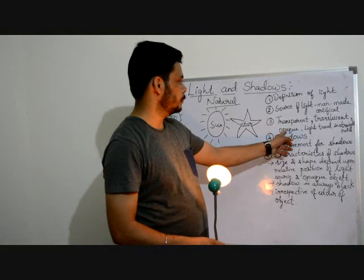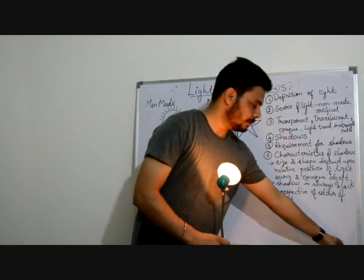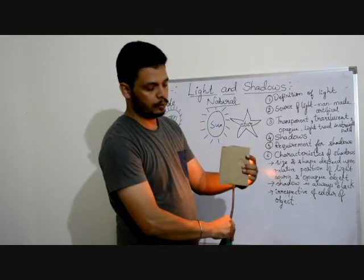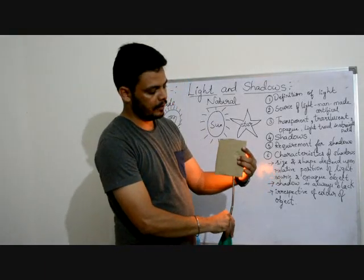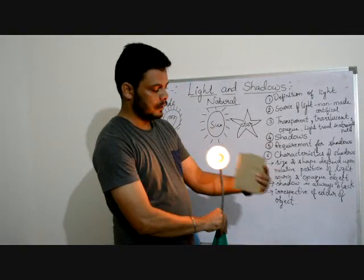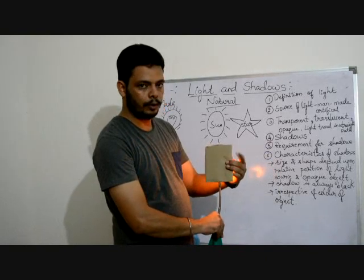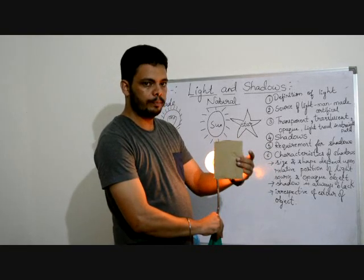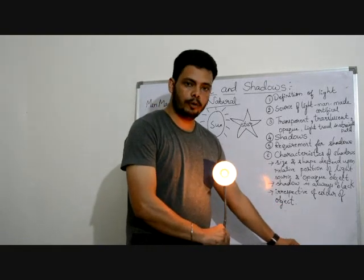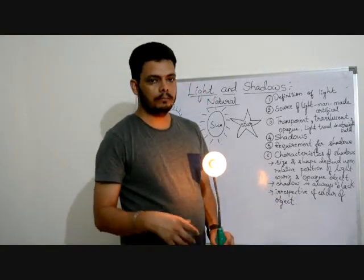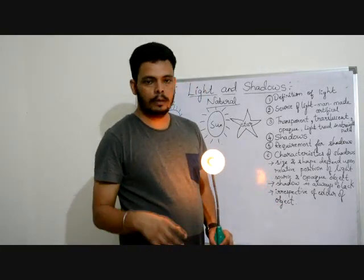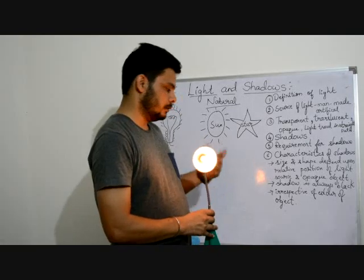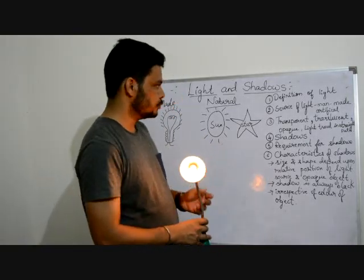The third kind of objects are opaque. Opaque means those objects which do not allow light to pass through them at all. All the objects which do not allow light to pass through them are known as opaque objects. They can be cardboard, wood, or metal sheet — these are all opaque objects.